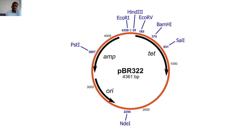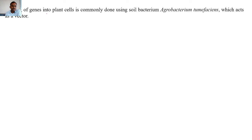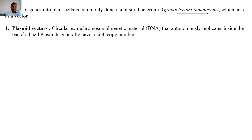PBR322 has an ampicillin resistance gene. We can use restriction enzymes to cut at specific restriction sites and insert foreign DNA at those positions. Cloning of a gene into plant cells is commonly done using the soil bacterium Agrobacterium tumefaciens. This bacterium is used to transfer the gene into the plant cell, and its plasmid vector is used in this process.